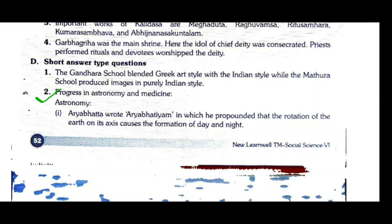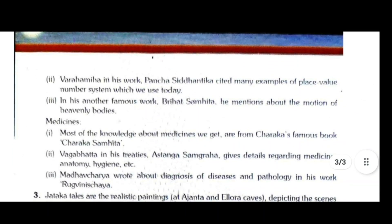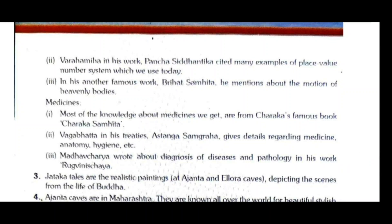Question two: Write a note on progress in astronomy during the ancient period. Aryabhata wrote the Aryabhatiyam, in which he propounded that the rotation of the Earth on its axis causes the formation of day and night. Varahamihira, in his work Pancha Siddhantika, cited many examples of the place value number system we use today, and in his other famous work Brihat Samhita, he mentions the motion of heavenly bodies.